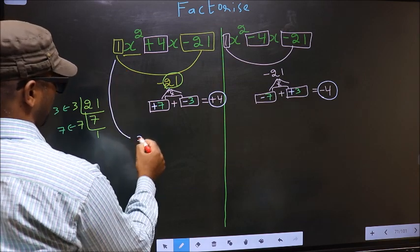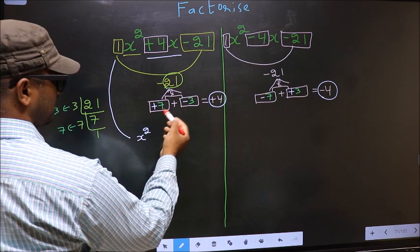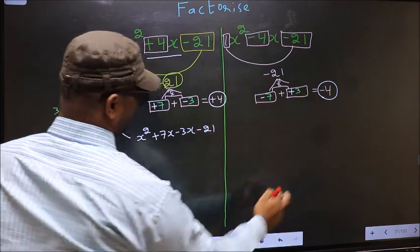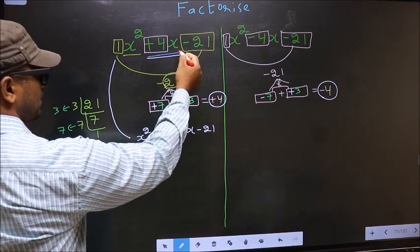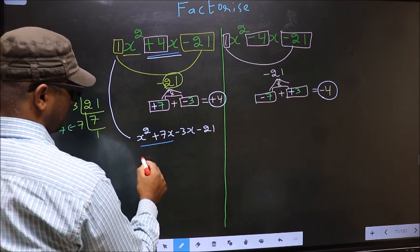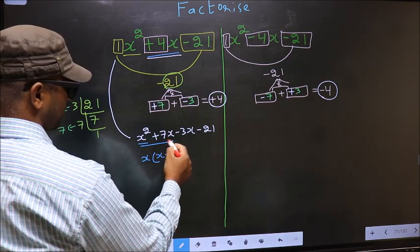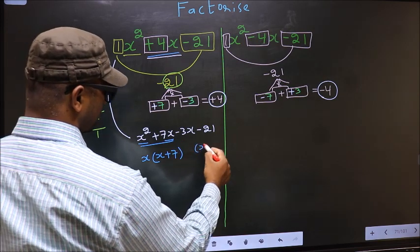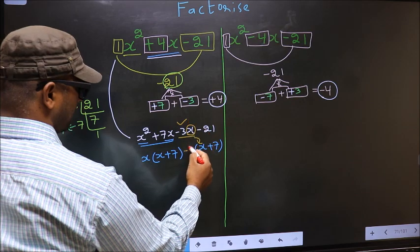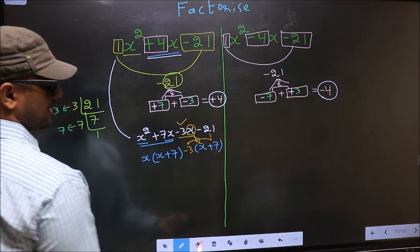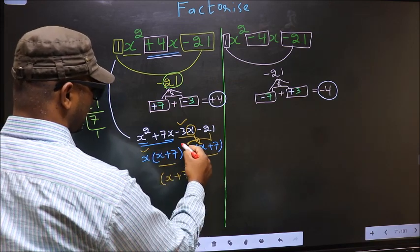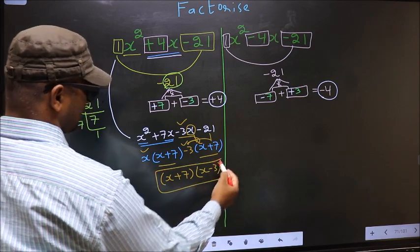Now for the first expression, rewrite x² + 4x - 21 by splitting +4x as +7x - 3x - 21. From the first two terms, take out x common: x(x + 7). From the last two terms, take out -3 common: -3(x + 7). Now take (x + 7) common: the answer is (x + 7)(x - 3).